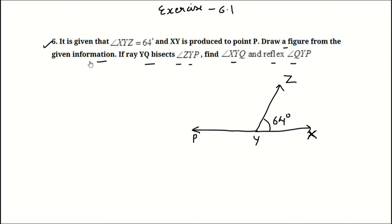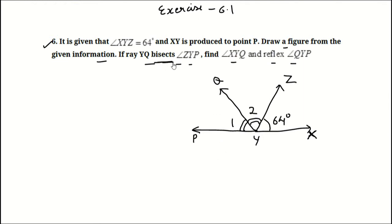Draw a figure from the given information. If ray YQ bisects angle ZYP — this is YQ — it means angle ZYQ and angle QYP are equal to each other. Bisect means equal part, so angle 1 is equal to angle 2.